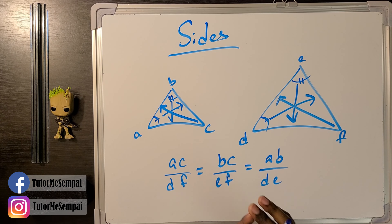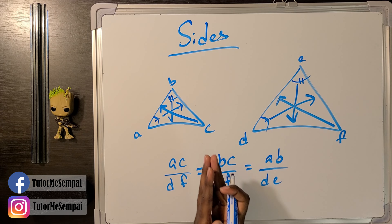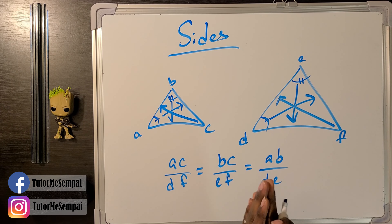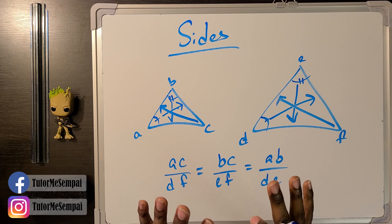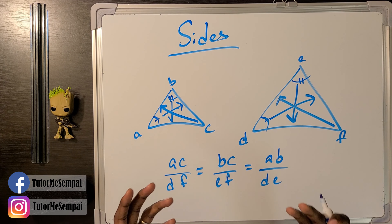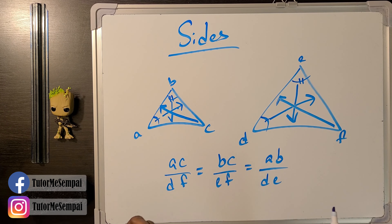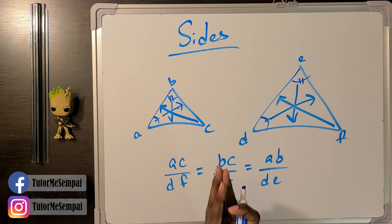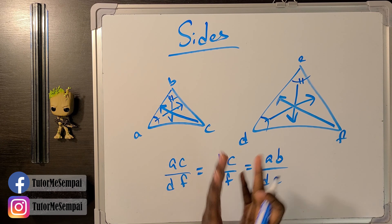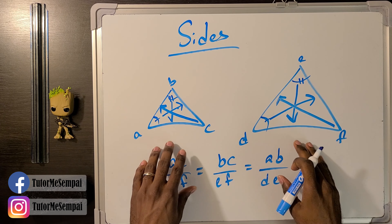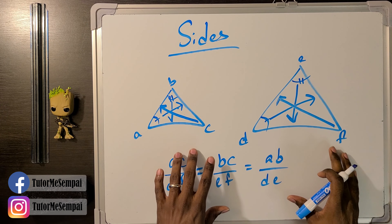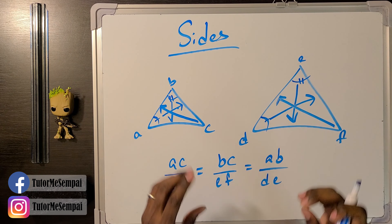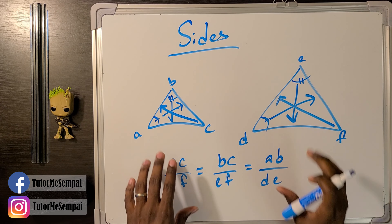Quick recap: congruent triangles require all corresponding sides equal and all corresponding angles equal. For similar triangles, we only need all corresponding angles to be equal, and a happy byproduct is that the corresponding sides are in proportion to one another. So if either of those things is given to you — corresponding sides in proportion or corresponding angles equal — you know you have similar triangles.